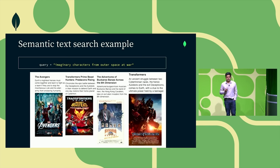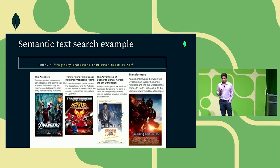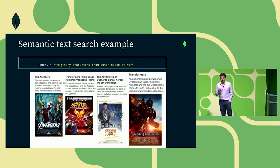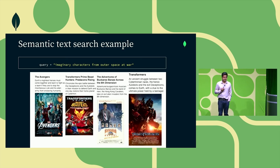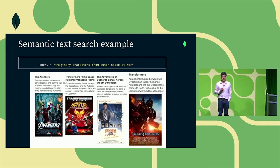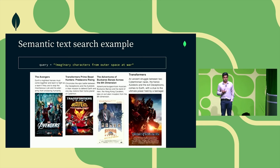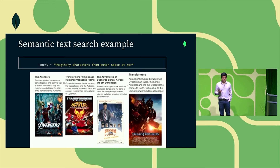From a current perspective, one of the biggest use cases we see is semantic text search. With this new class of models, you can take your text data and convert it into vector embeddings using an AI model. That gives you the ability to search semantically — based on the meaning of things rather than the keywords that are actually present. That opens up some exciting possibilities.